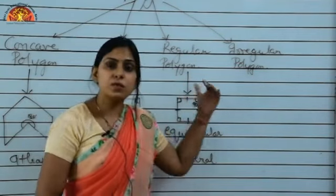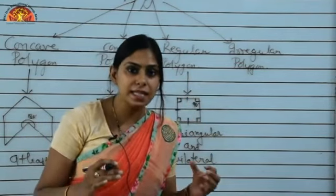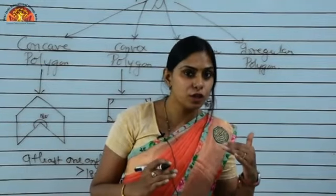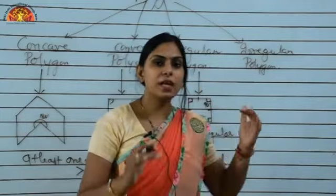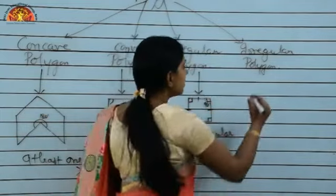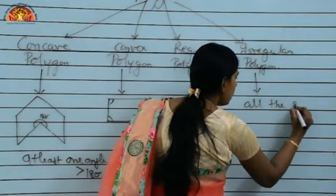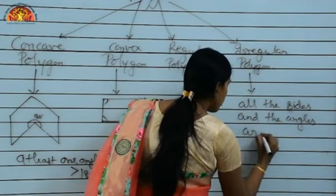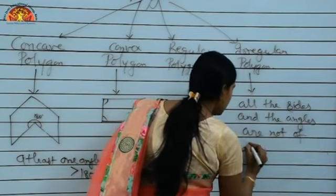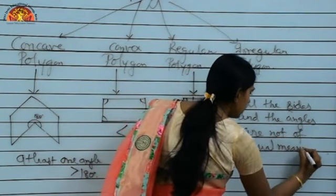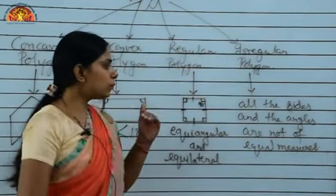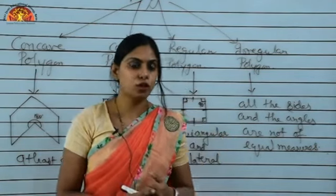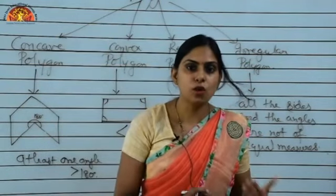An irregular polygon is just the vice versa of the regular polygon. In an irregular polygon, all the sides and angles are not of equal measures. That means in the case of an irregular polygon, they are not equiangular and not equilateral.